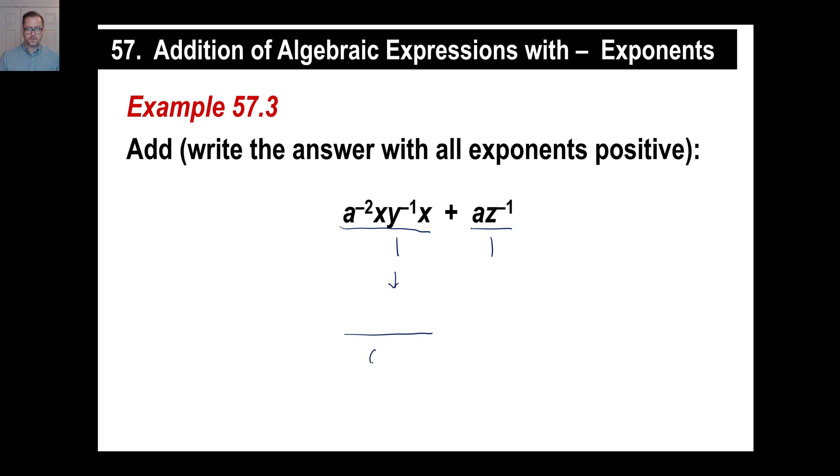The X times the X, that can stay that way up top since they're both positive. So there's your X². Now, the Y⁻¹ goes down here and becomes Y¹. Alright. There's your first denominator.